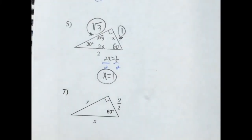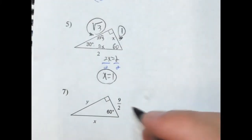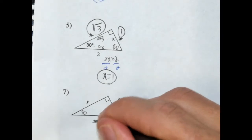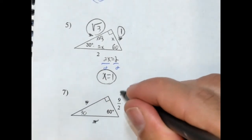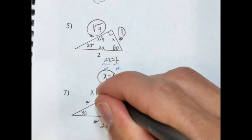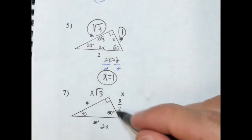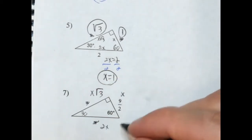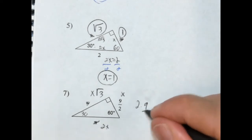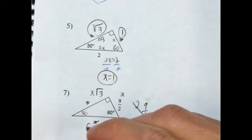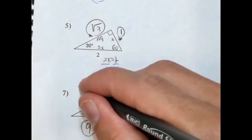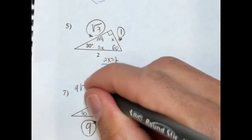Let's take a look at number 7. So 30 here. Cross these out. That means this is x, this is 2x, and this is x radical 3. So 2 times this would be 2 times 9 over 2 — this would cancel — this would be 9. So this is 9. And this times radical 3 would simply be 9 radical 3 over 2.